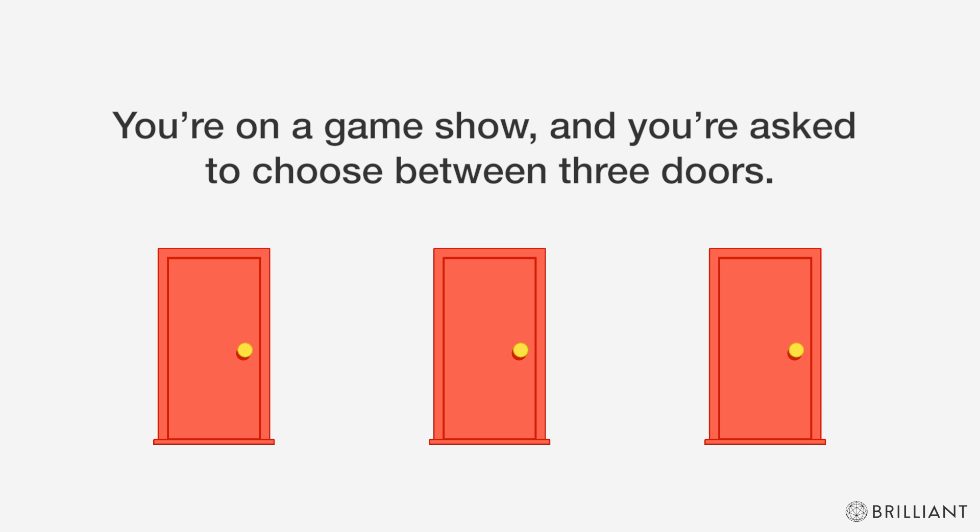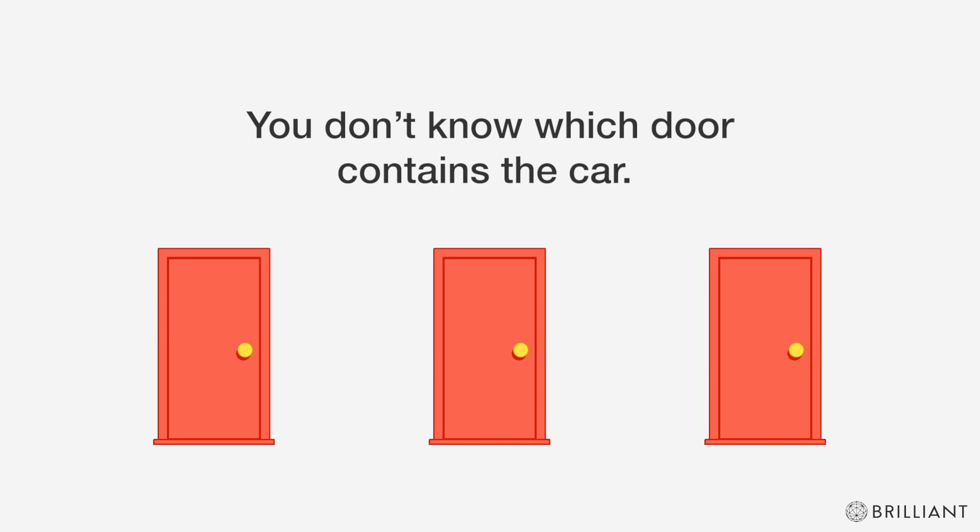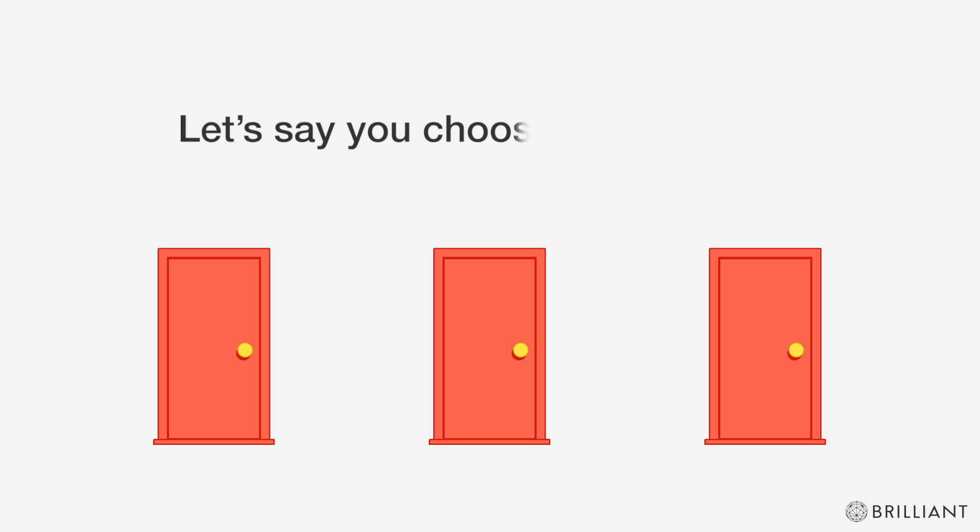You're on a game show and asked to choose between three doors. Behind one door is a car, and behind the other two are goats. You don't know which door contains the car. Let's say you choose the first door.